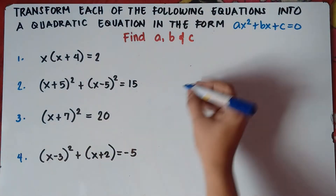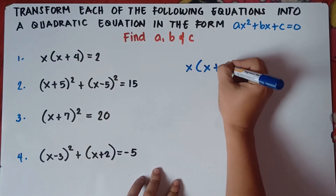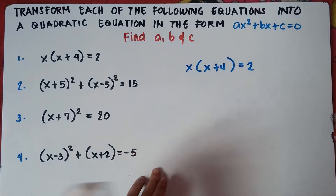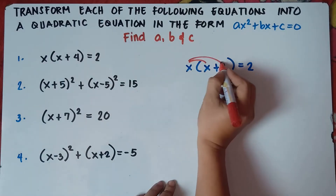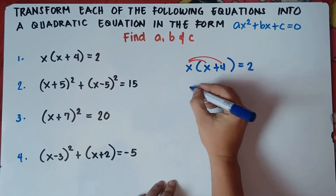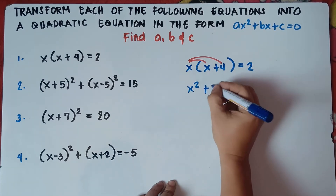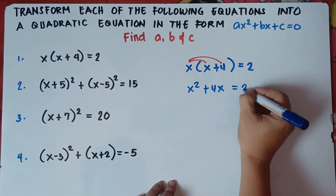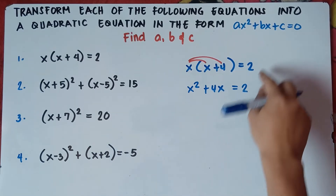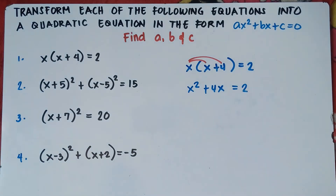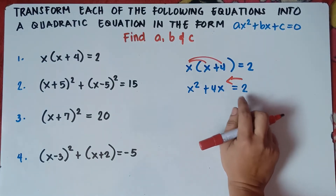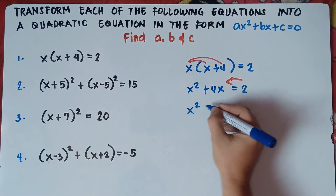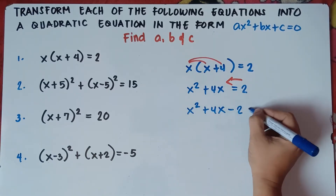Let's start with number 1: x(x + 4) = 2. We just need to distribute x from this equation — multiply x times x and x times 4. So x times x is x squared, and x times positive 4 is positive 4x. Then copy equals 2. Now we need to transpose 2 from right to left. Always remember: once you transfer a term across the equal sign, you change the sign. So positive 2 becomes negative 2.